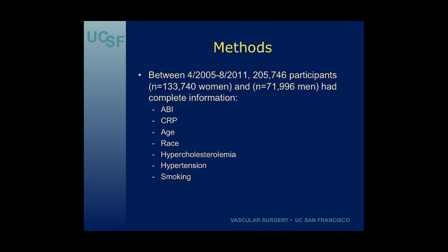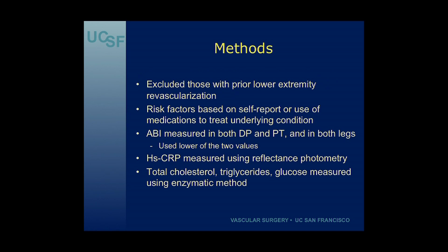Between April 2005 and August 2011, there were over 205,000 participants — double the number of women compared to men — who underwent measurement of ABI and CRP. We chose this subset because they had complete information on age, race, hypercholesterolemia, hypertension, and smoking from detailed questionnaires. We excluded those with any prior lower extremity revascularization. Risk factors were based on self-report or use of medications to treat the underlying condition being reported.